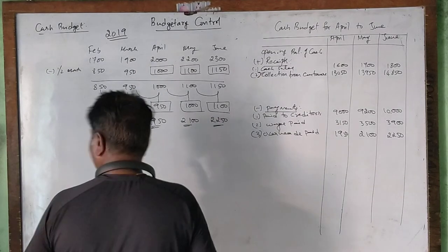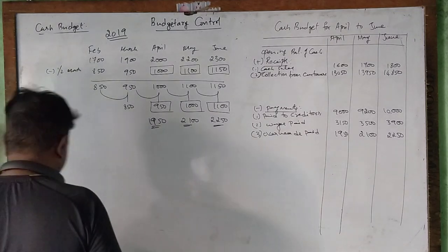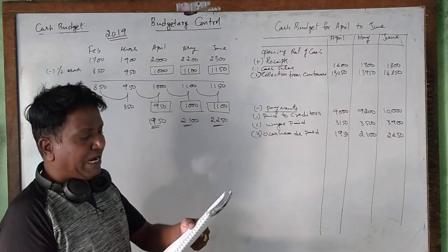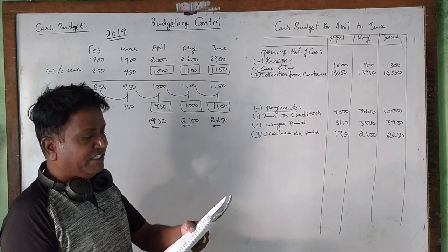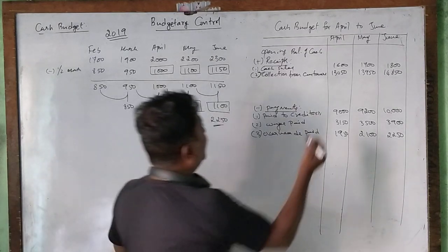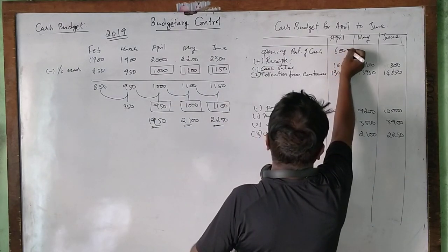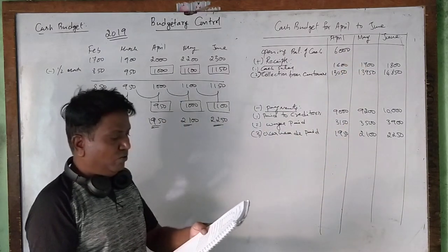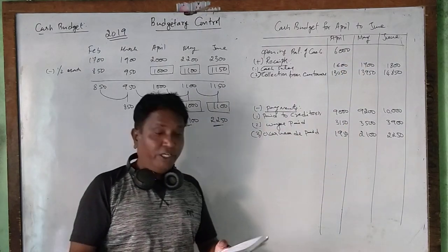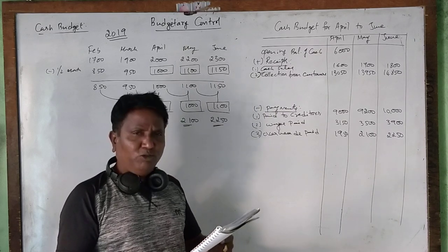Next adjustment: cash and bank balance on 1st April 2006 expected 6,000 rupees. The opening balance of cash is 6,000 rupees.